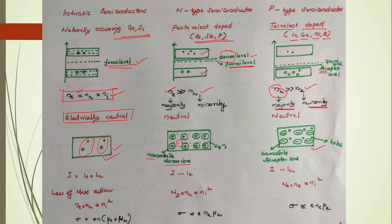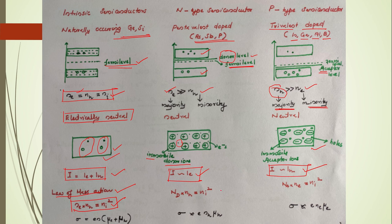The law of mass action: at thermal equilibrium, n_e × n_h = n_i² for an intrinsic semiconductor. For an n-type semiconductor, replacing electron density with donor atom density: n_D × n_h = n_i². For a p-type semiconductor, n_A × n_e = n_i², where the acceptor ion concentration is predominant in number.